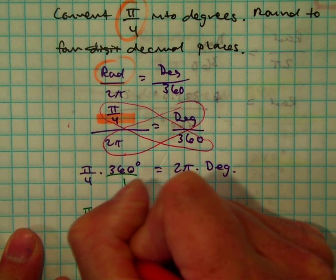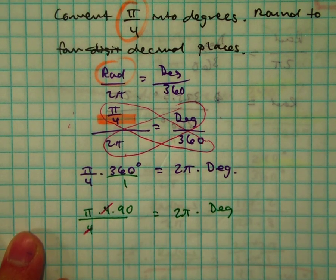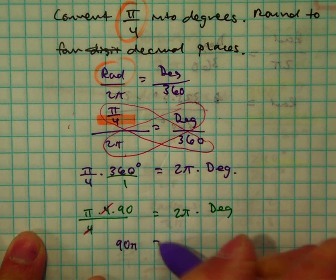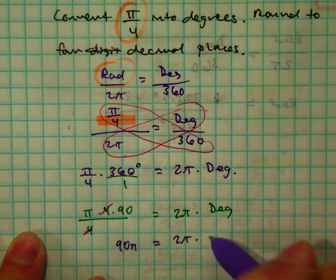I'm going to cancel my 4's. What are you left with? 90π. 90π equals 2π times degrees.